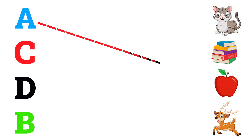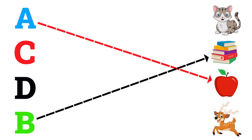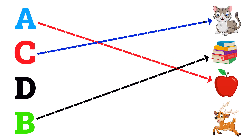A for apple, B for book, C for cat, D for deer.